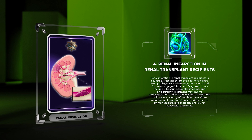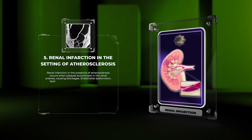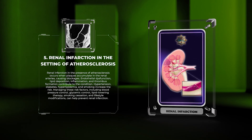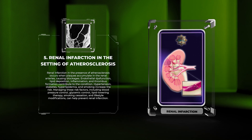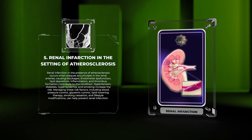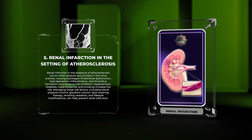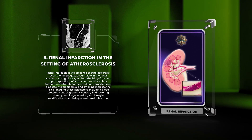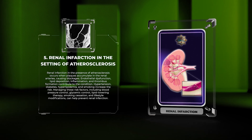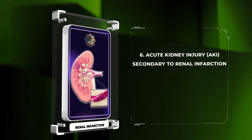Treatment may involve anticoagulation and revascularization procedures, or in severe cases, graft nephrectomy. Close monitoring of graft function and adherence to immunosuppressive therapies are key for successful outcomes. Renal infarction in the presence of atherosclerosis occurs when plaques accumulate in the renal arteries causing blockages. Endothelial dysfunction, lipid deposition, inflammation, and thrombus formation contribute to the condition.